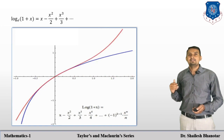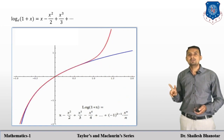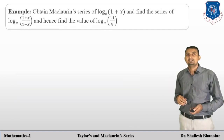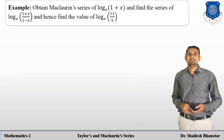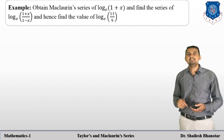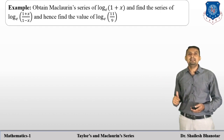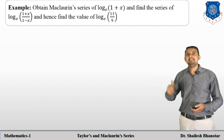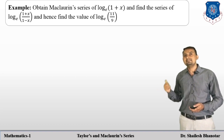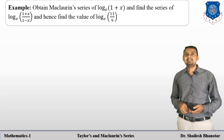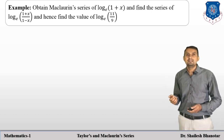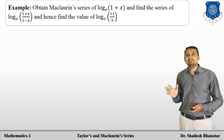Looking at the graph: first x, then the first two terms, then the first three terms — the graph approximates log(1+x). Now let us look at a very common example: obtain the Maclaurin series of log(1+x) to base e, and find the series of log((1+x)/(1−x)) to base e, and hence estimate log(11/9) to base e.